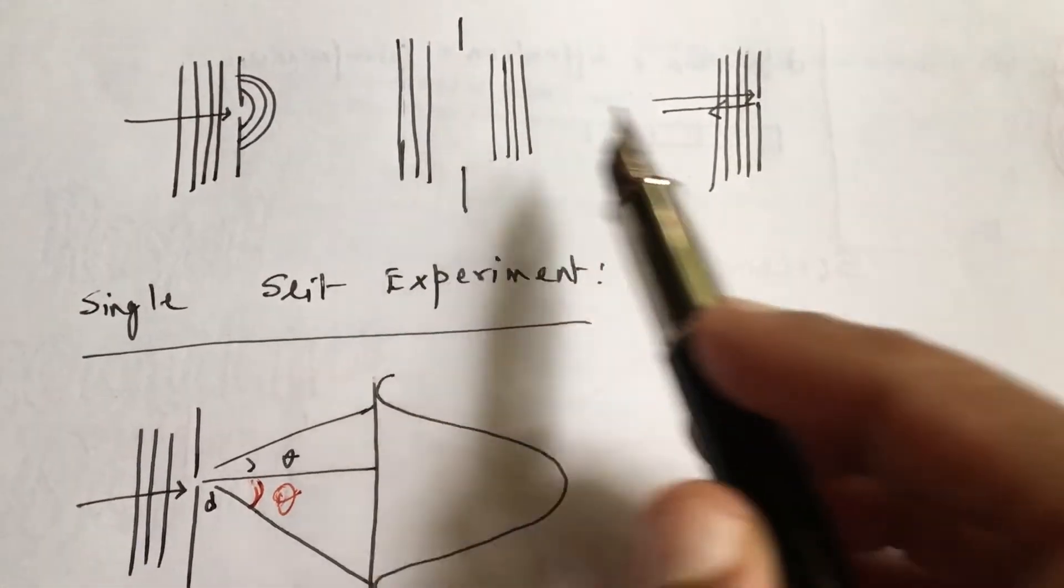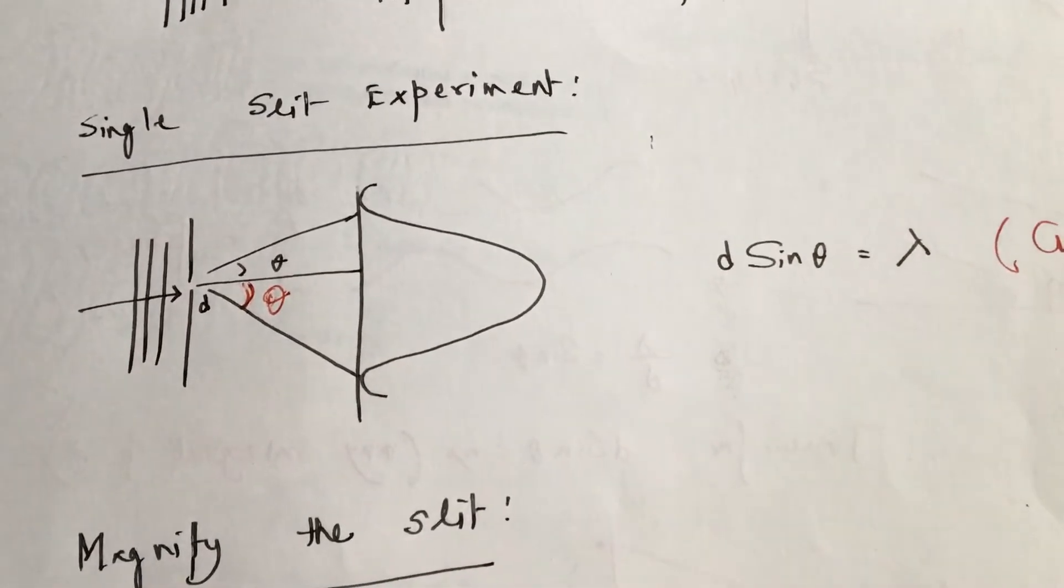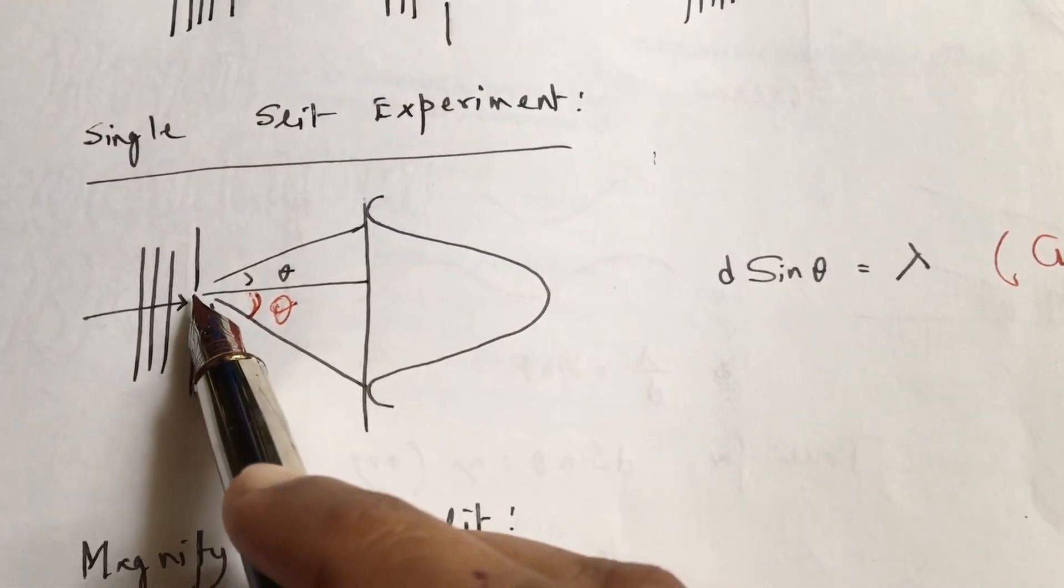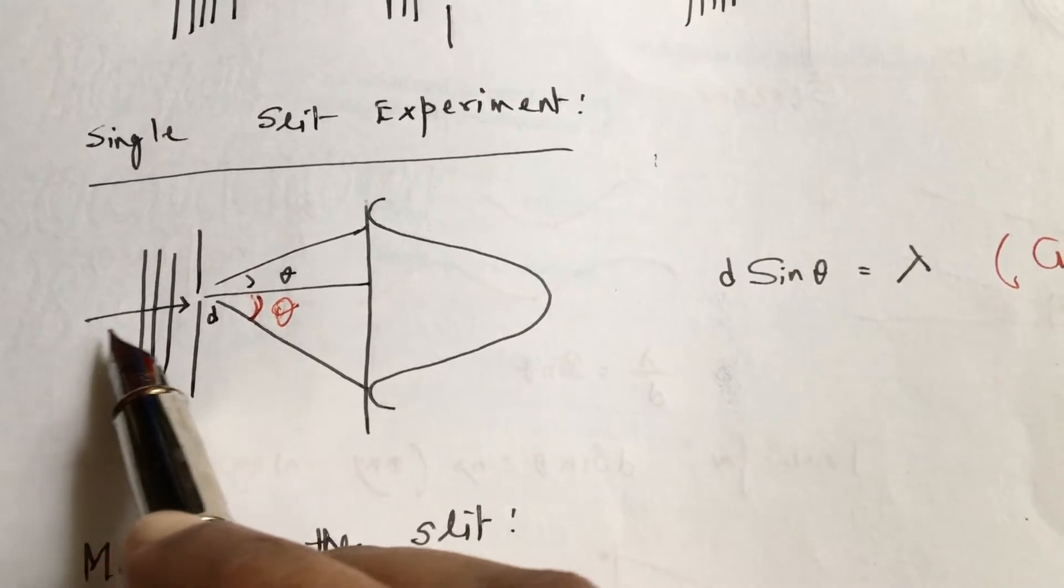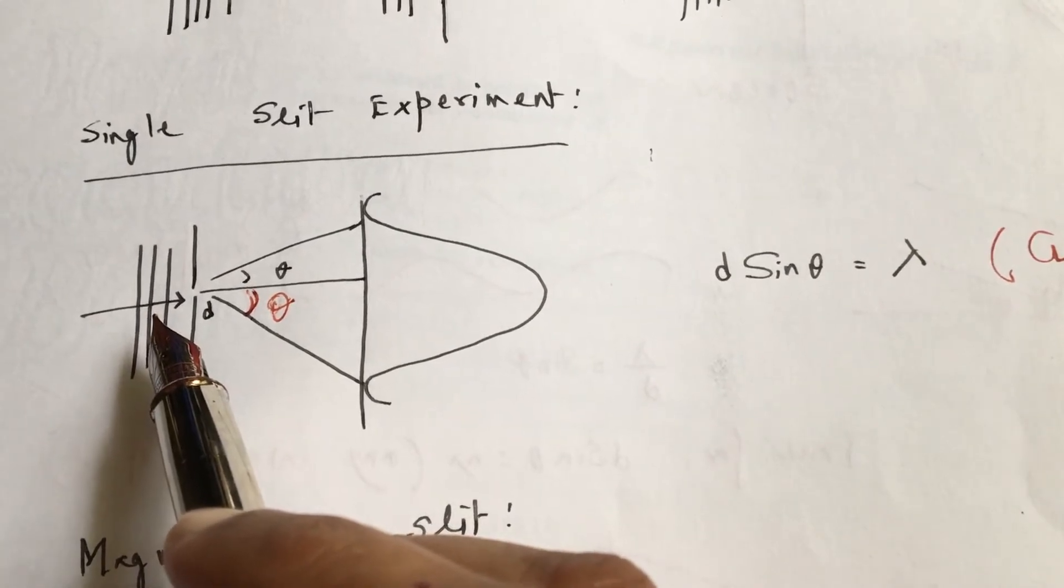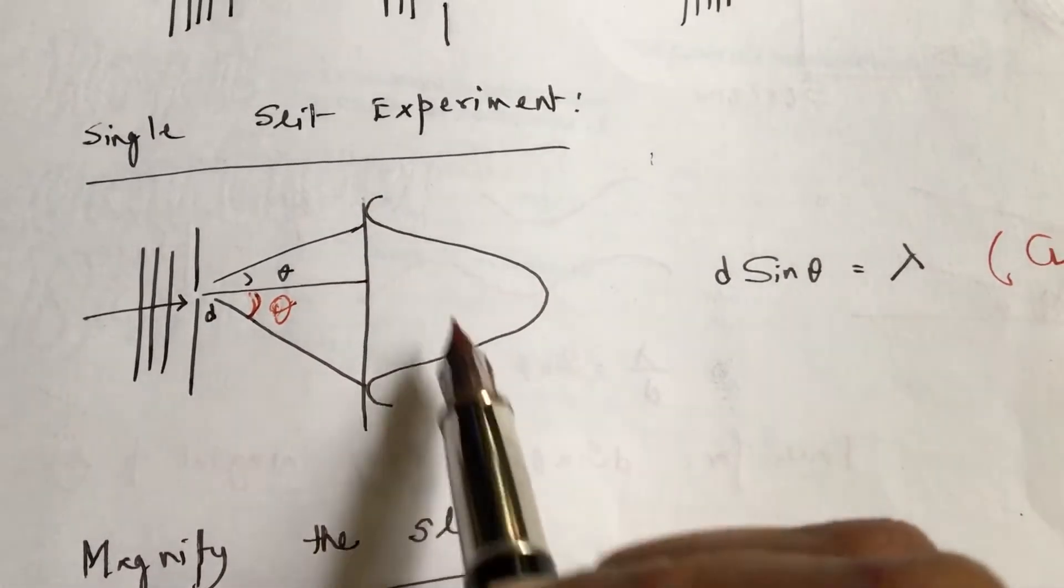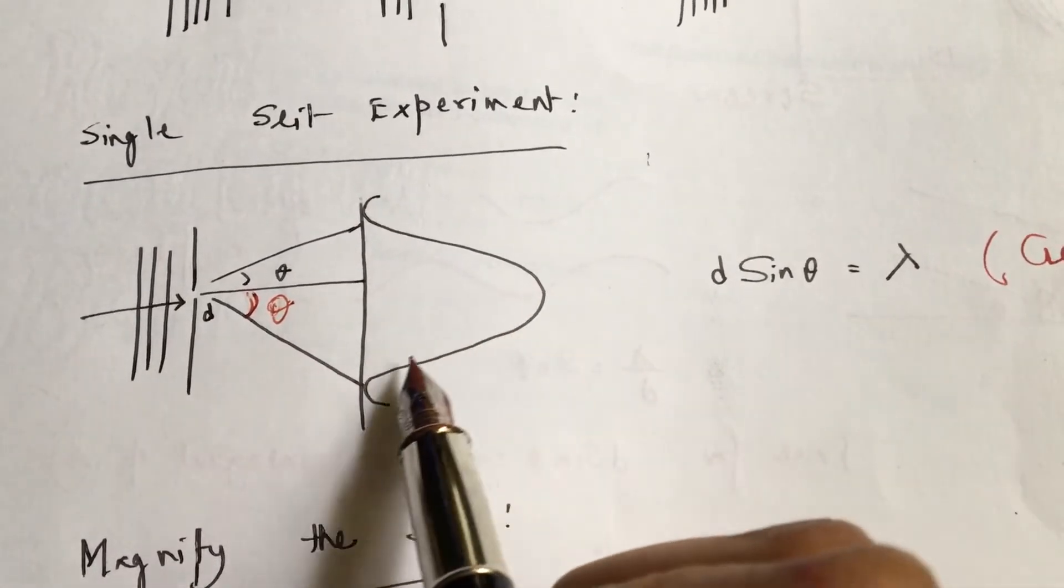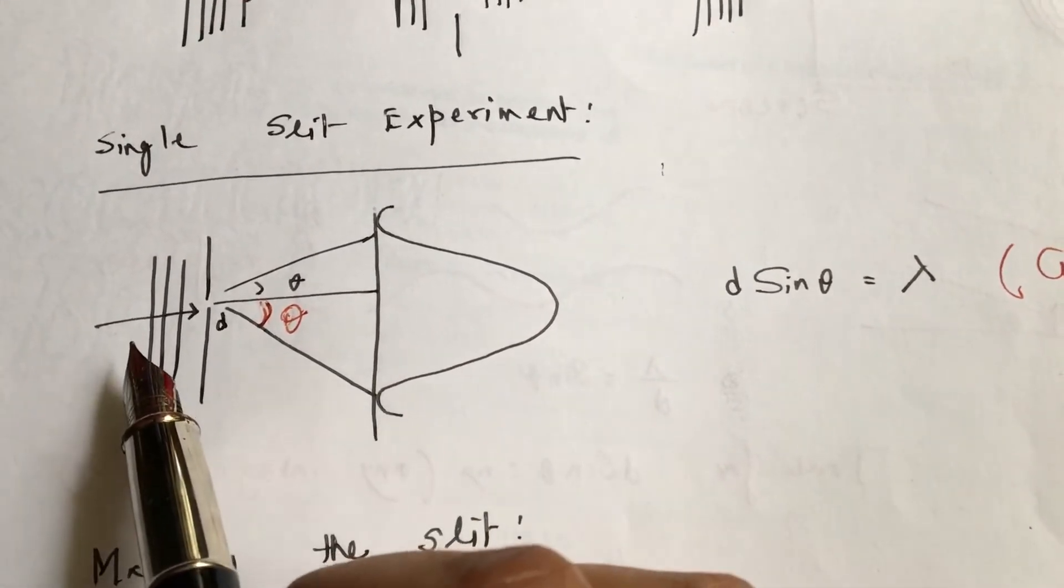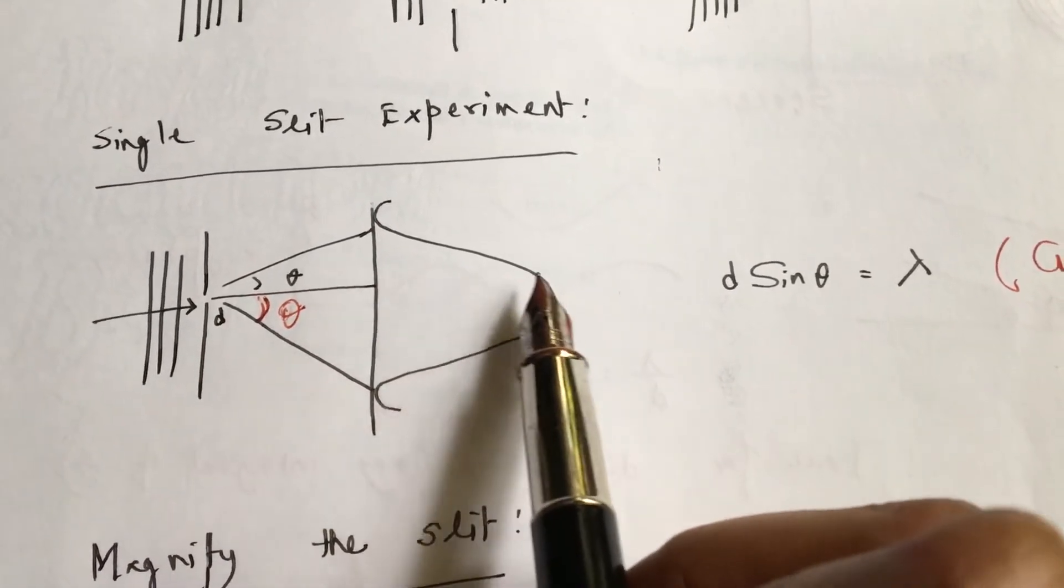Let's come to the single-slit diffraction experiment. If the slit width and the wavelength lambda are compatible, then we get a pattern where the intensity is very high in some places. If we use light, we get a very bright pattern.